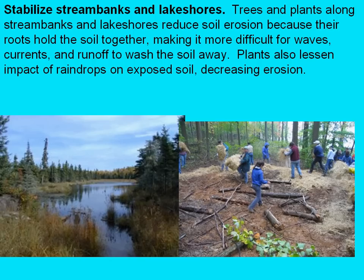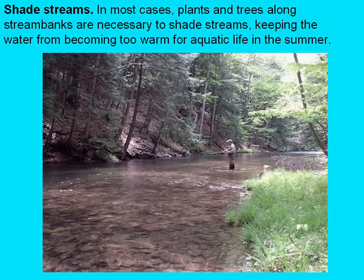Especially in the mountains of western North Carolina and in the western states, plants and trees along stream banks help shade streams, which keeps water temperatures down. This is especially important for cold-water fish species such as trout, which require cool streams in order to reproduce and thrive.